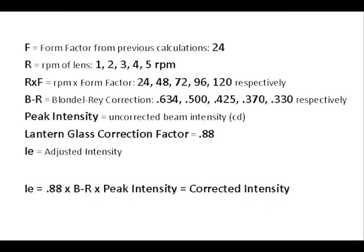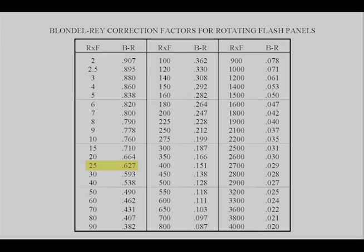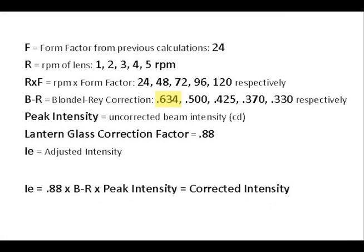The form factor in our example is 24. Five speeds will be used from 1 through 5 RPM. To demonstrate the formula, 1 RPM will be used. Going back to the Blondel Ray chart, F form factor of 24 multiplied by 1 RPM would be 24. The closest number of 25 on the chart specifies a Blondel Ray correction factor of 0.627. Interpolating the exact number would be 0.634.